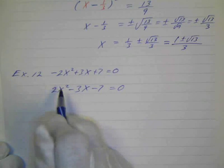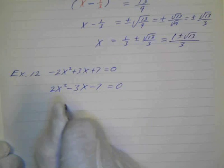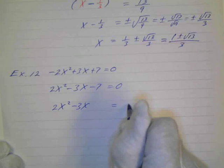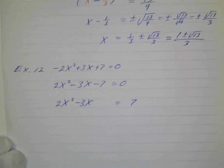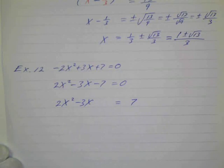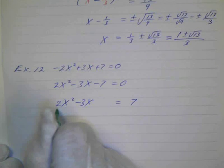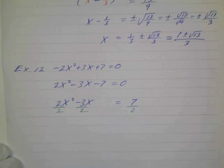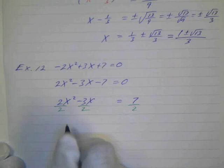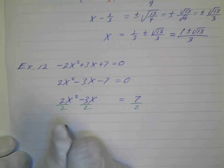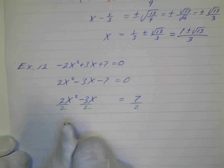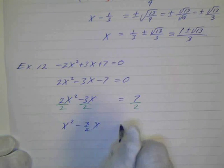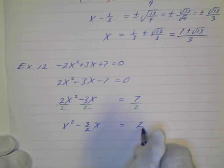And then we'll just isolate our x squared and x terms like we did before. So we've got 2x squared minus 3x equals 7. I add 7 to both sides. Then I'll get rid of this coefficient of the x squared. We don't want that. We want that to be 1, so divide everything by 2.